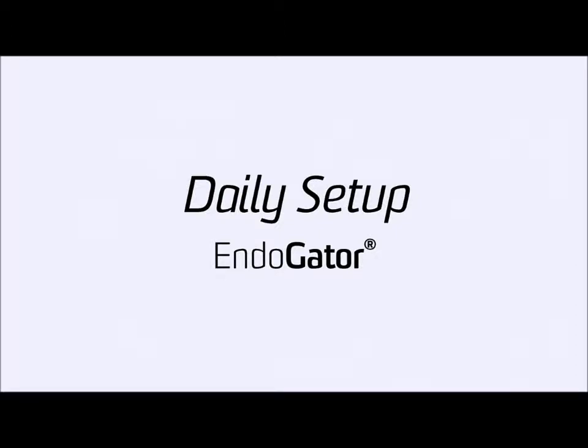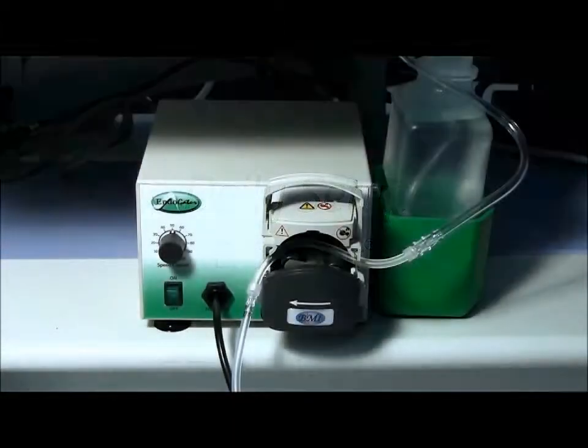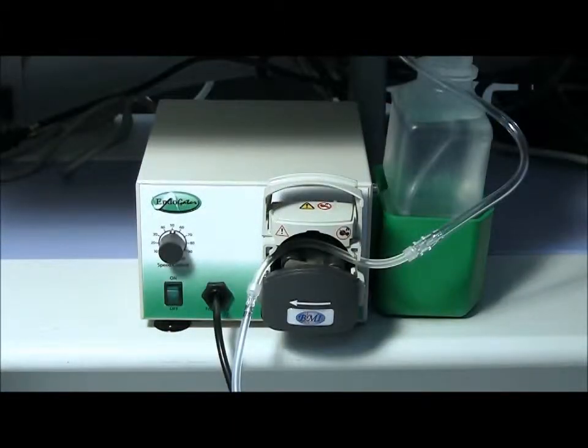It also has an endogator tube set specifically designed to be used with our EGP100 irrigator. With our pump, a water bottle holder is provided. Place a sterile water bottle in the holder and connect the cap to the bottle in the exact same manner.